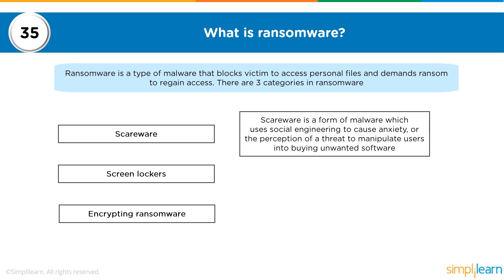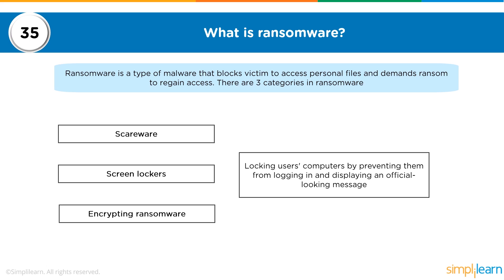There are three types of ransomware. The first is scareware, which uses social engineering to create anxiety or the perception of a threat, manipulating users into buying unwanted software. A pop-up appears scaring you into believing you've been attacked, then instructs you to download software — the malware is hidden in that download, and ransomware gets installed. The second is screen lockers, which lock users' computers by preventing login and displaying an official-looking message, blocking access to the login page.